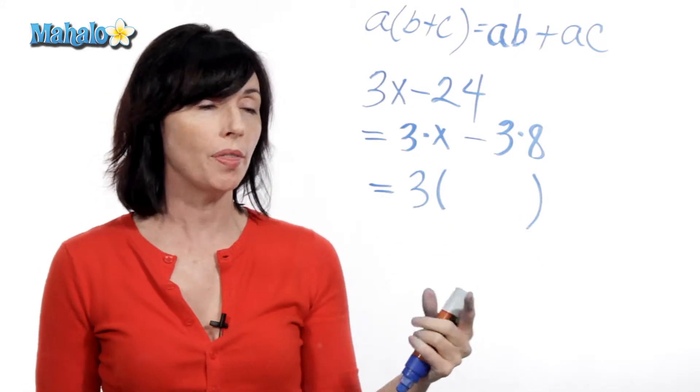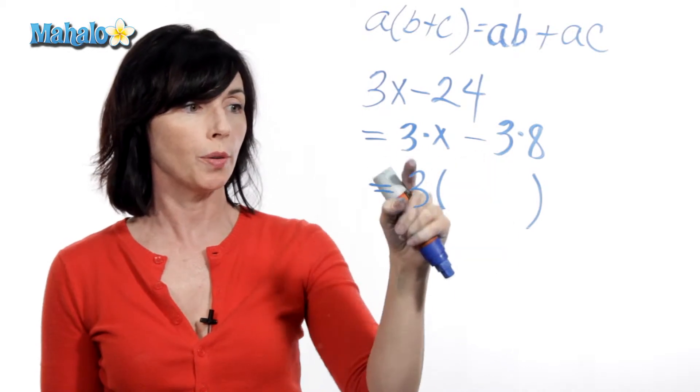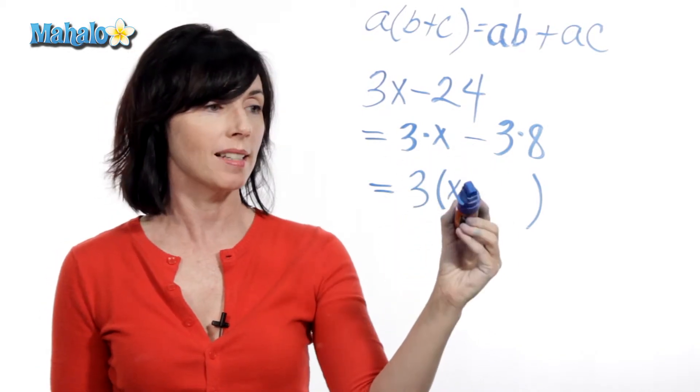What goes inside the parentheses is whatever you have left over here, and you're going to keep your sign. So I took the 3 outside. That leaves me an x minus 8.